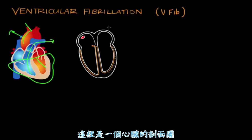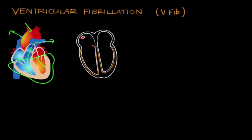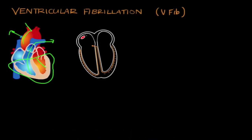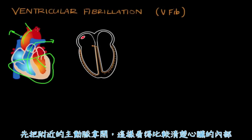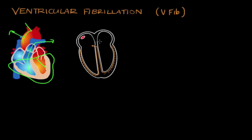Over here we have a heart diagram looking at the inside of the heart, just like on the left. But this diagram on the right highlights some of the important structures in the electrical conduction system. I've taken out the big vessels so you can get a better view of the inside of the heart.